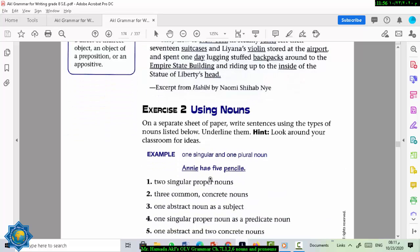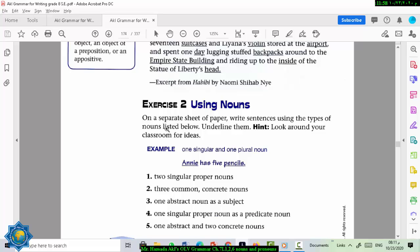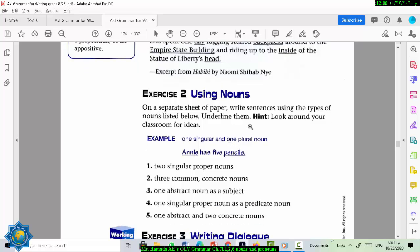Okay, next exercise, you need to, it's about using nouns. On a separate sheet here of paper, write sentences using the types of nouns listed below. Underline them. And in order to help you, you can look around your classroom or your room at home to find, to help you find ideas. One singular and one plural noun. So look around your room now. Find something singular. Find something plural.